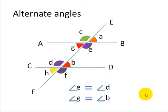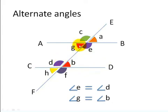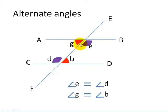Now we are going to look at alternate angles. Angle E and angle D, shown here in the same color, are alternate angles. Alternate angles are equal, so angle E is equal to angle D. Similarly, angle G is equal to angle B, and these are also called alternate angles. Removing all other angles, you can see clearly that angle E equals angle D and angle G equals angle B — these are alternate angles.